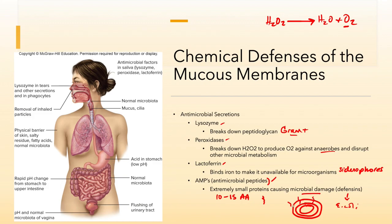If these defensins drill little holes, remember the proton motive force is within this membrane. If we drill these little holes, all of those hydrogen ions — or protons — are going to leak out. And if all of the protons leak out, then the cell will not have a proton motive force in order to make ATP. So these defensins will cause leakage of the protons so that the proton motive force and ATP production will cease and the cell will die.